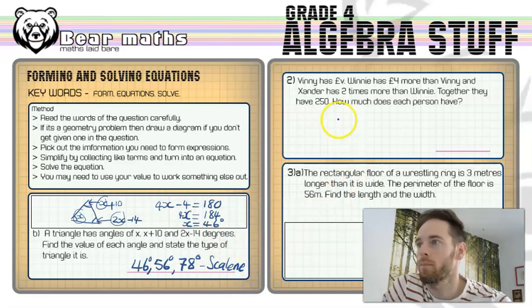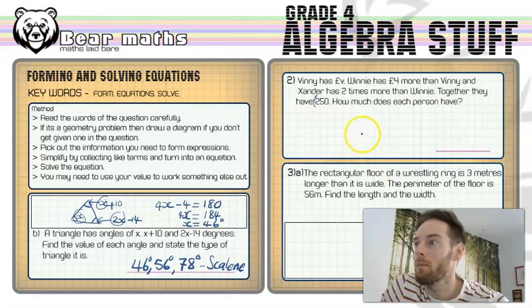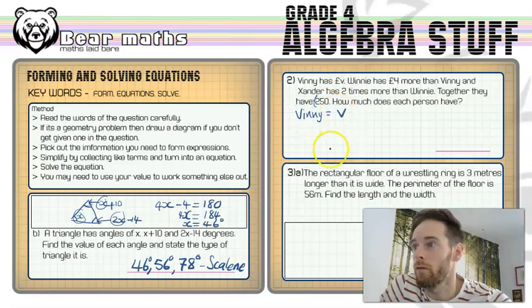Now up into question 2, we've got Vinny. And Vinny's got v pounds. Winny has got 4 pounds more than Vinny. And Zander, it's the only name I can think of with a z in it, has 2 times more than Winny. Together, they have 250 pounds. How much does each person have? So again, this is a forming and solving equations question. It starts with the person that's got the standard v amount or x amount or just unknown amount at the beginning here. So Vinny's got v pounds. I'm going to write down Vinny equals v, just the letter v and ignoring the pounds because all of the units are exactly the same.